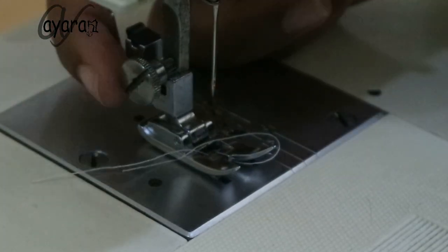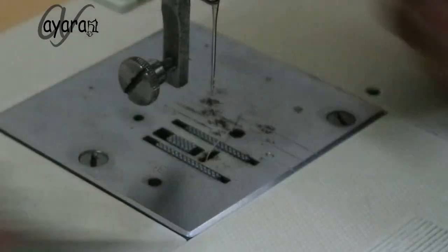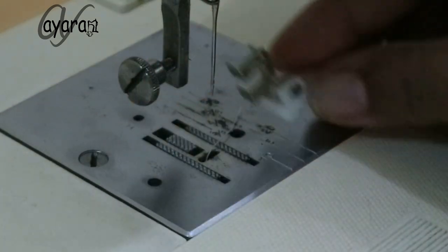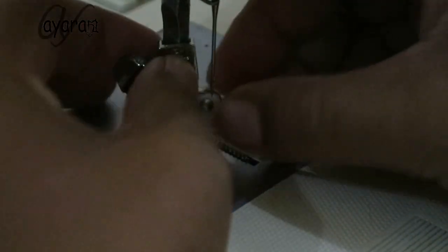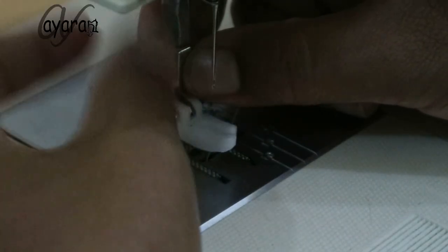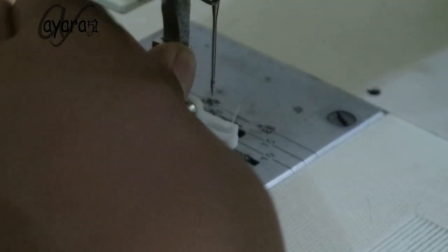We turn the bolt to loosen it and remove it. Then there's this grooved metal piece - insert it directly. We loosen the bolt a bit, then tighten it again. Now it's ready to use.